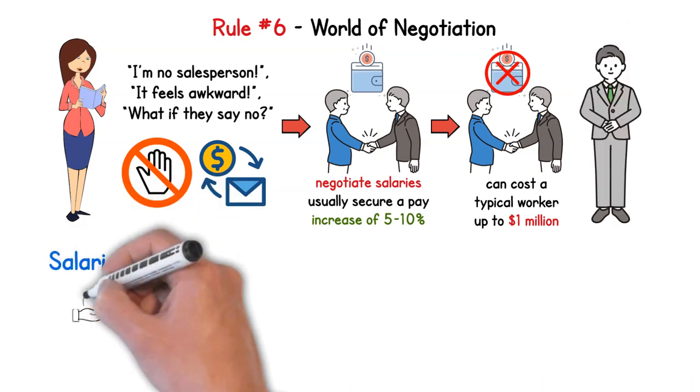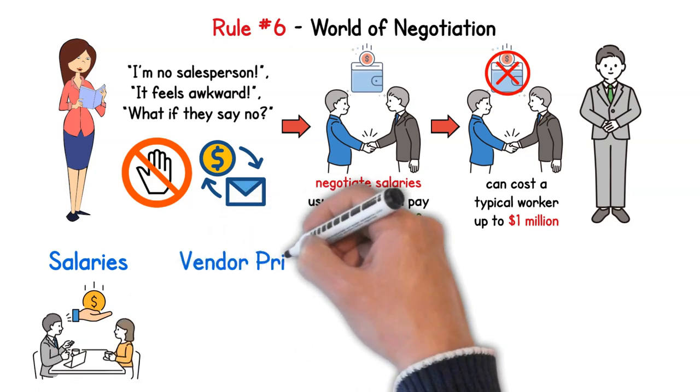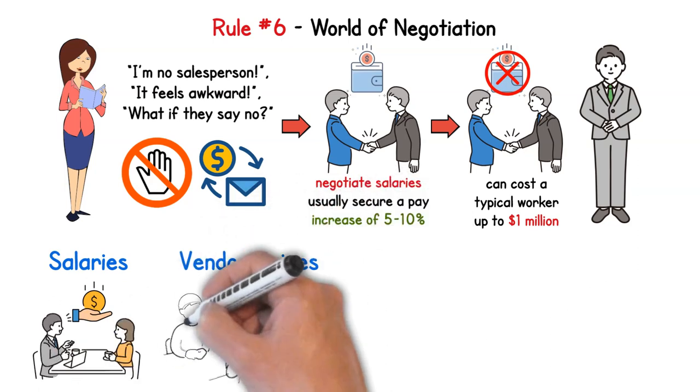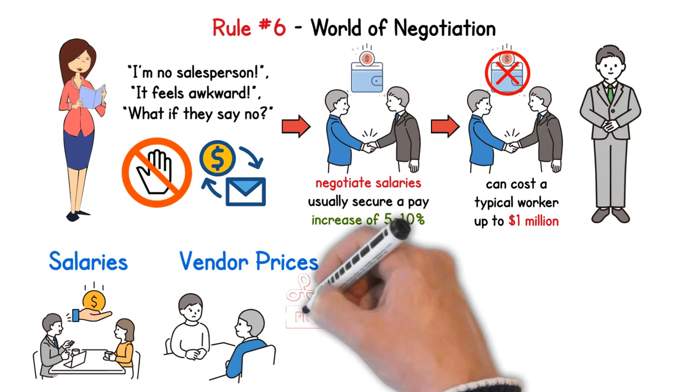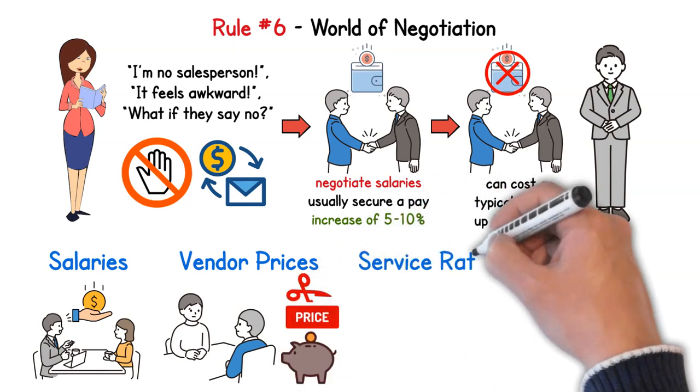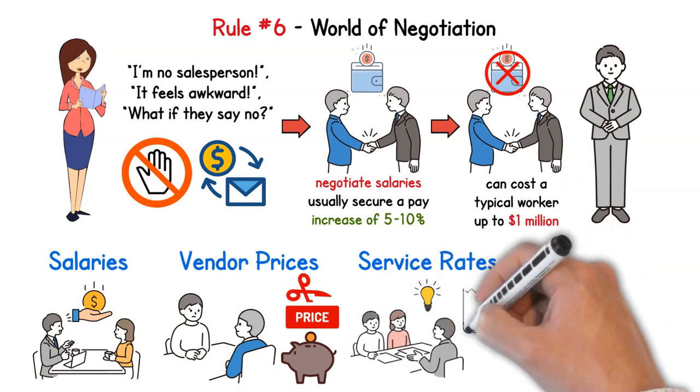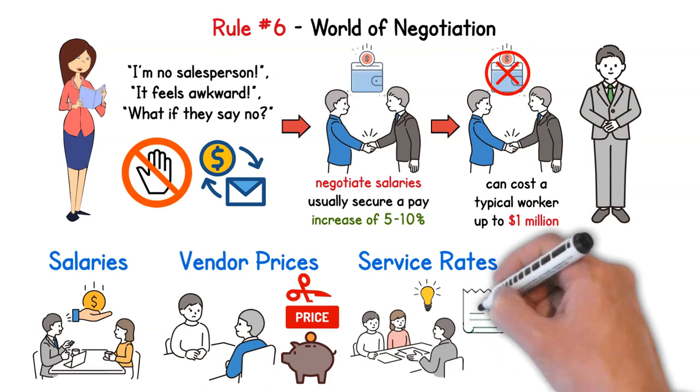Let's break down some common arenas for negotiation. Salaries: always approach a job offer as a starting point, not the end deal. Vendor prices: running a business or even planning an event? Negotiating with suppliers can lead to significant savings. Service rates: whether it's your internet bill, gym membership, or even hotel rates, always ask if there's wiggle room.